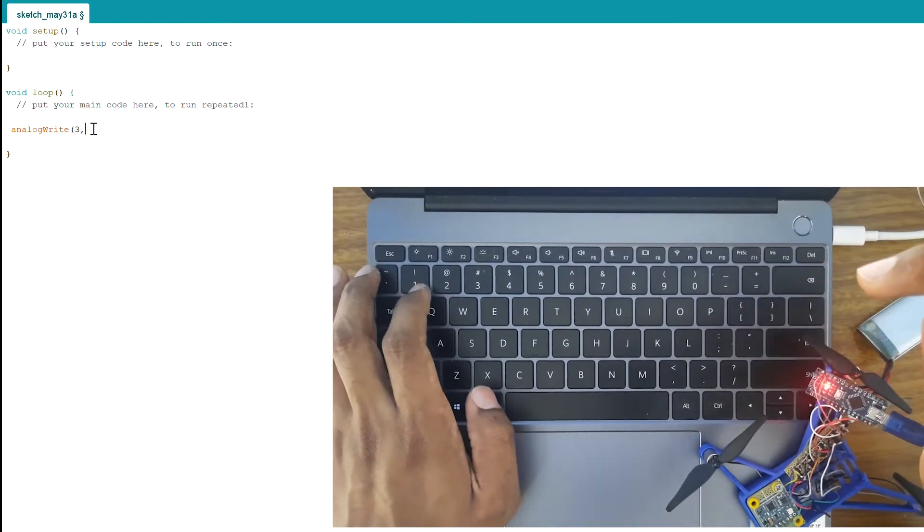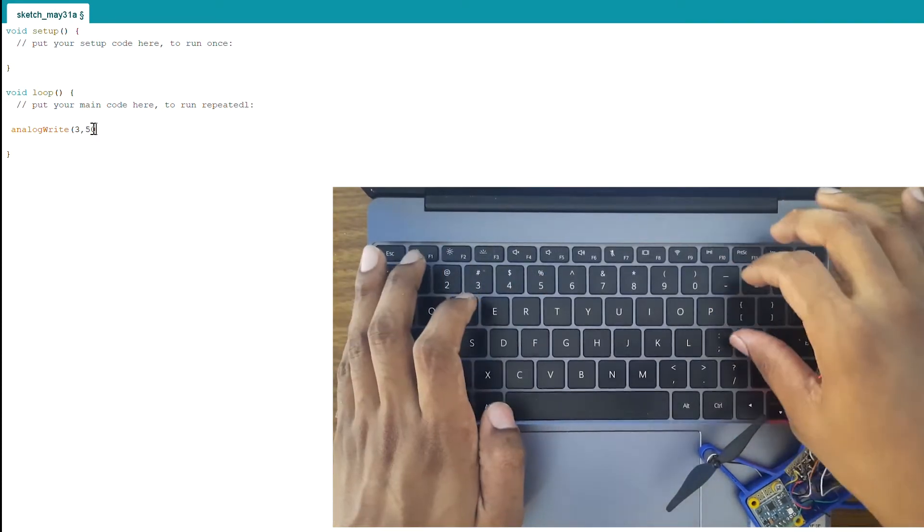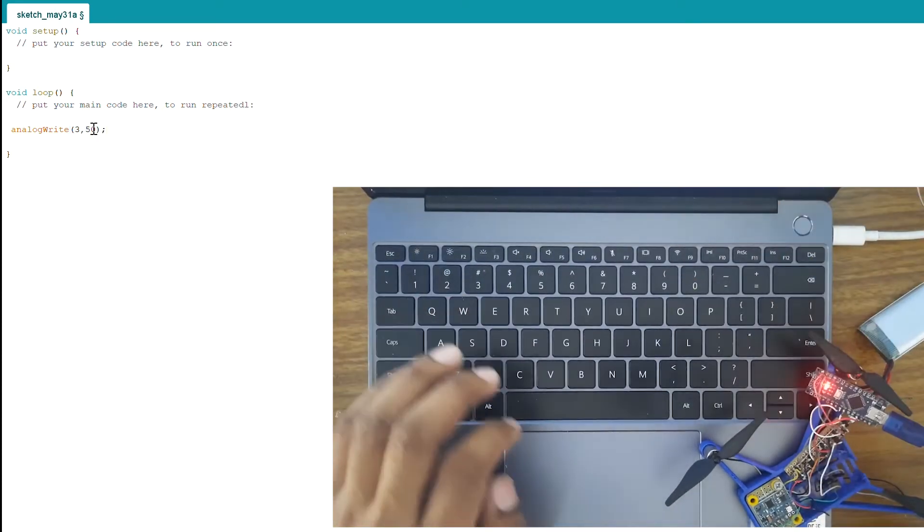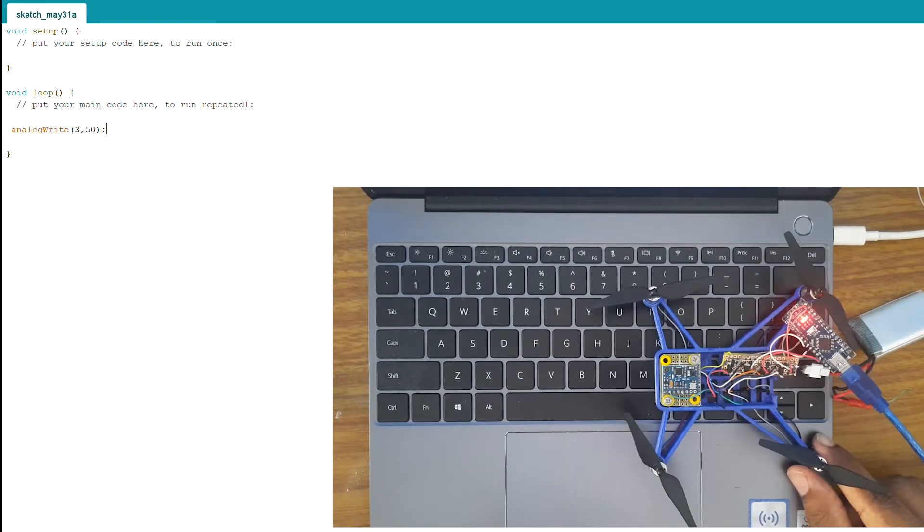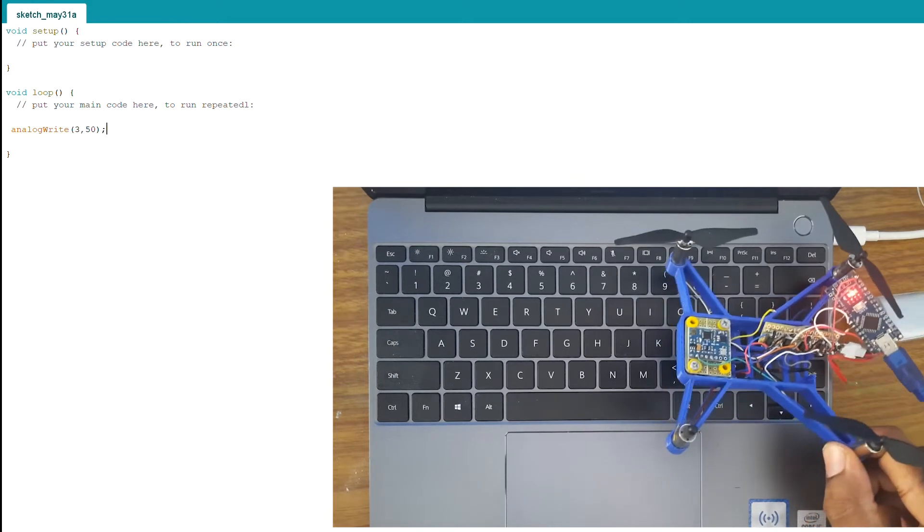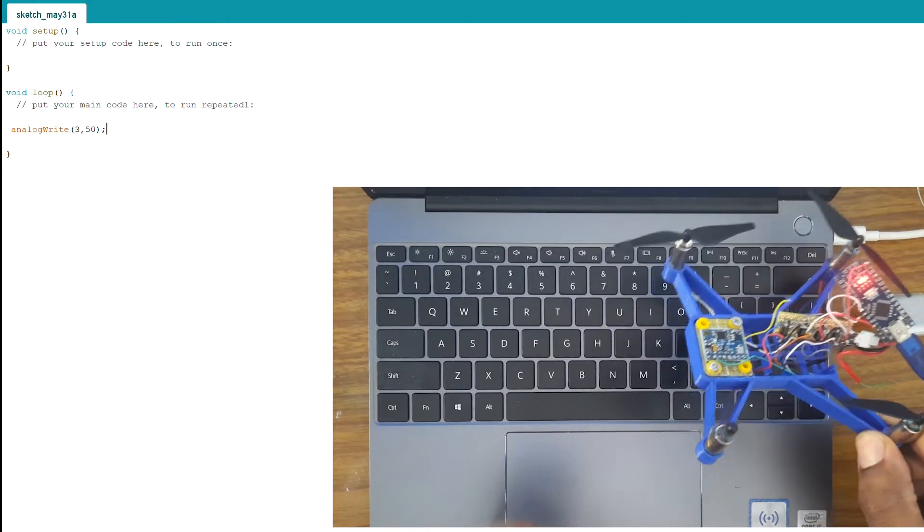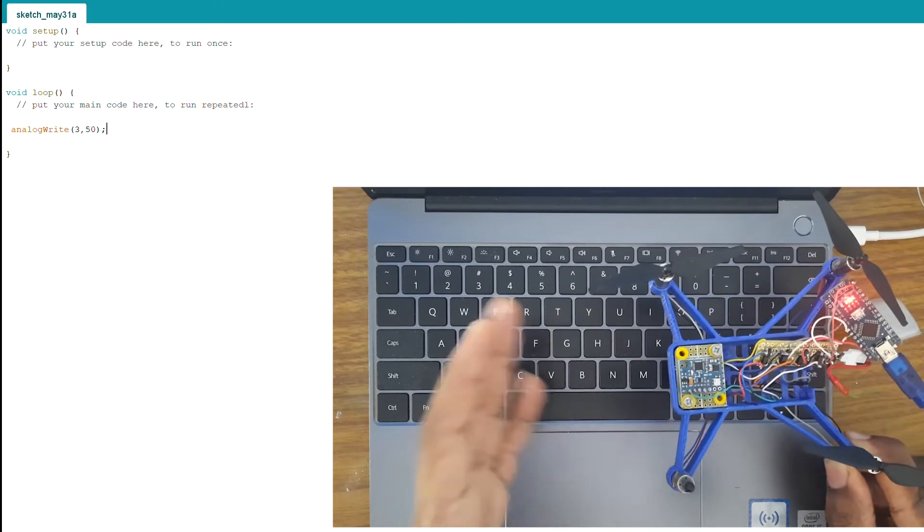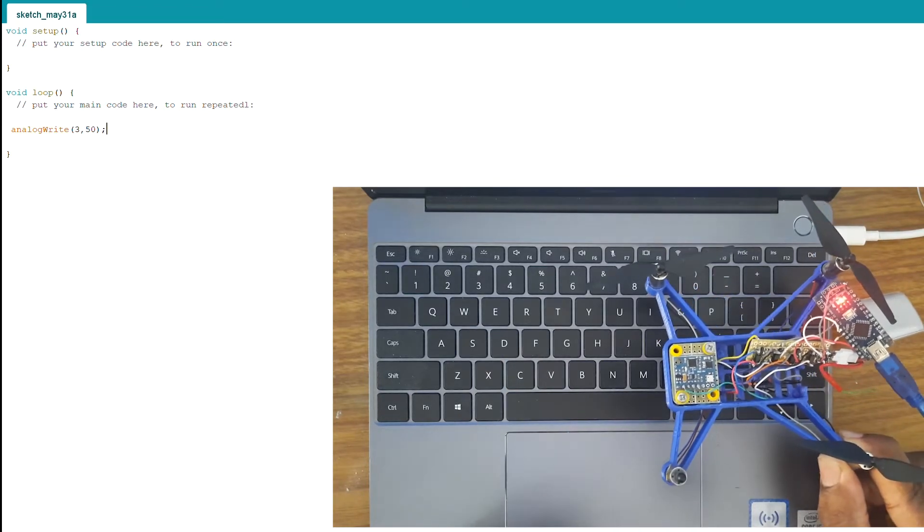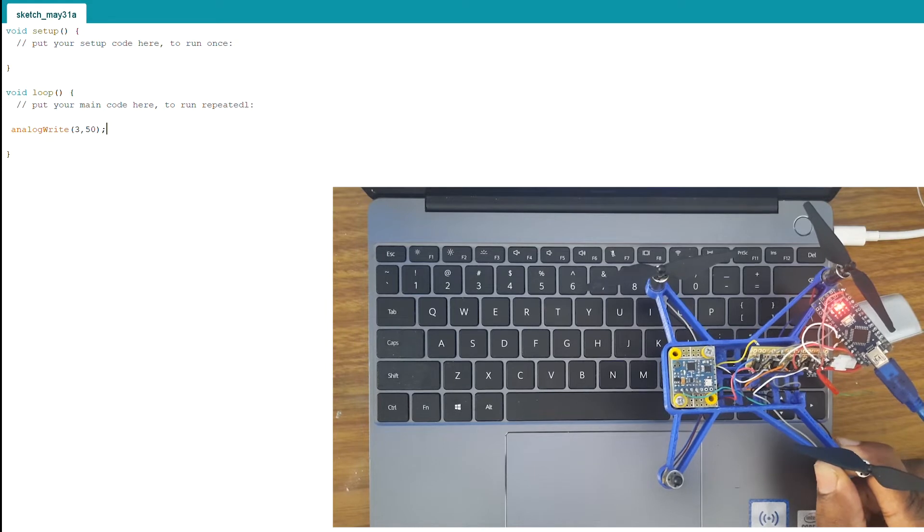Then I'll just upload this to the Arduino. You can see right there, once we upload the code, the first motor is running fine. That means our connection for the first MOSFET is right.